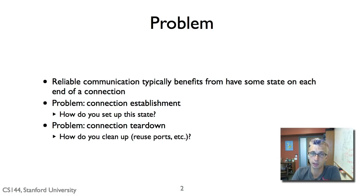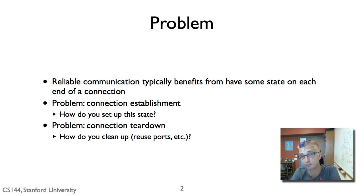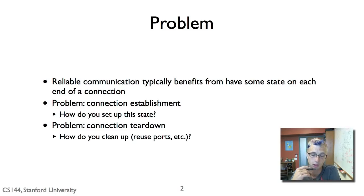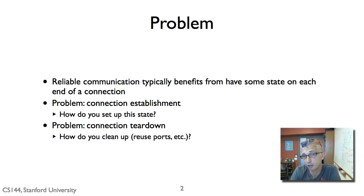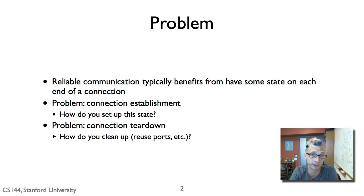The high-level problem is: if we want to communicate reliably, it's very helpful to have state on one or both ends of the connection. You can communicate reliably with something stateless on one end, but it's much less efficient. Having a little bit of state gives you much better throughput. But if we have this state, there's the problem of how do we set it up — connection establishment — and given the state takes up RAM, when can we tear it down? When can we garbage collect this state and reuse it? Examples include the memory structures, buffers, and port numbers used for your TCP connection. So there are these problems of connection establishment and teardown.